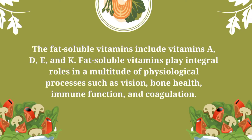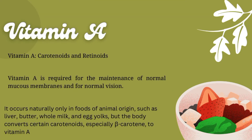First of all, Vitamin A. Vitamin A includes carotenols and retinols. Vitamin A is required for the maintenance of normal mucous membrane and for normal vision. It occurs naturally only in foods of animal origin, such as liver — liver is a very good source of Vitamin A. Deficiency can cause blurry vision and skin effects.